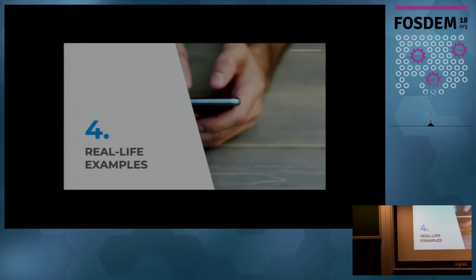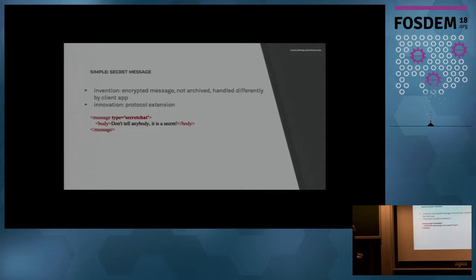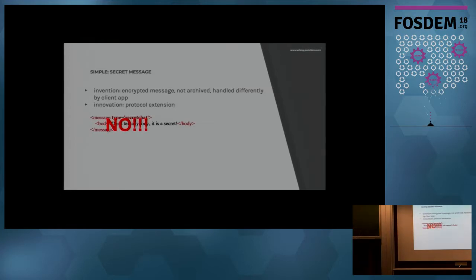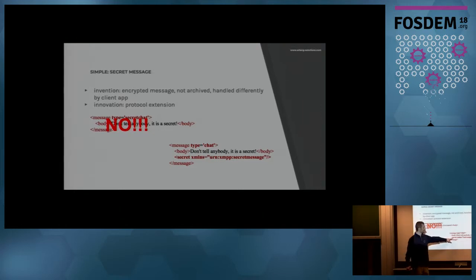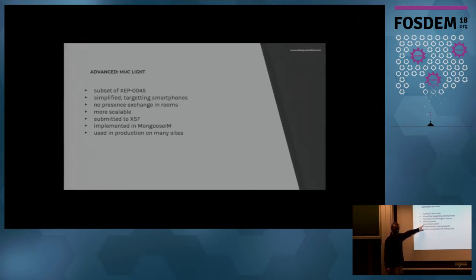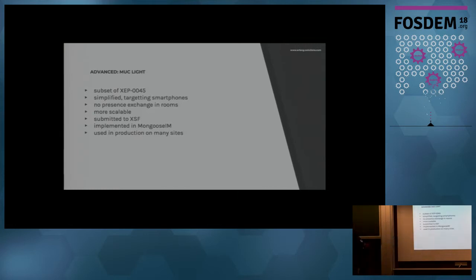We've actually done this a few times. Here's a secret message example — somebody wants to send messages that are handled differently, and this is a real-life case. The first idea is to add a new message type like 'secret chat.' No — don't do this, you'll break everything. The way to do it is to insert another namespace and flag the message as secret. It's a piece of cake to implement on the server and the client can handle it easily. The other example is MUC light — a simplified lightweight version of multi-user chat, which is more scalable. We submitted it to XSF two years ago and are still trying to have it approved. Chances are slim but we're not giving up, and we use it in production on many sites — so it's more or less proven to work.